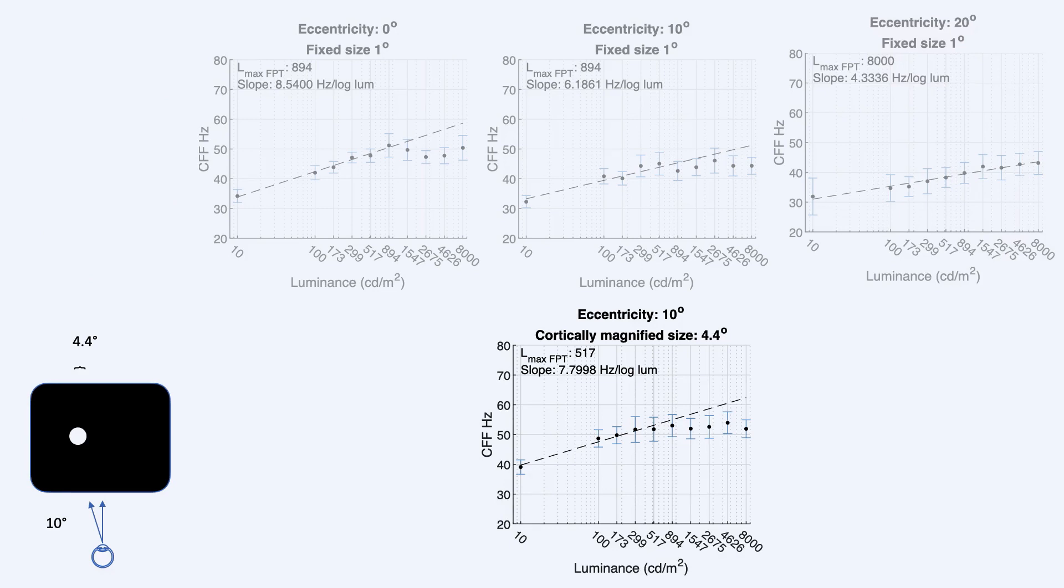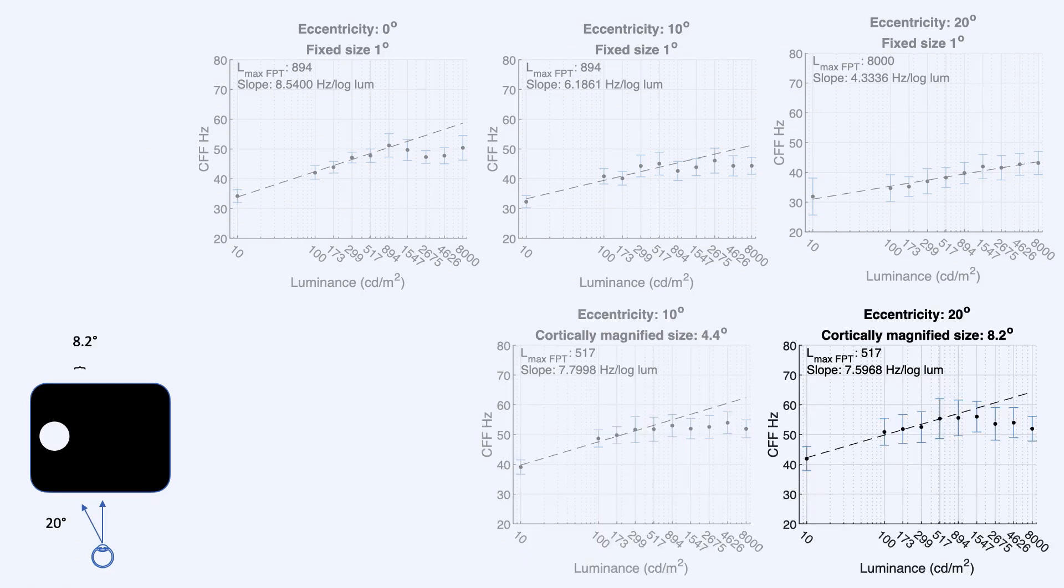Here's the cortically magnified case. This is only for the eccentric stimuli, non-foveated. We tried to use Rovamo's model to get the size of the stimulus that would be equivalent. What we get is a much higher sensitivity that is more or less in line with the foveal one. We still get that interesting non-linear behavior at the high luminances. Something similar happens for 20 degrees as well. Although from experience, that condition is more difficult to perform, so we get a little bit of noise in our results.